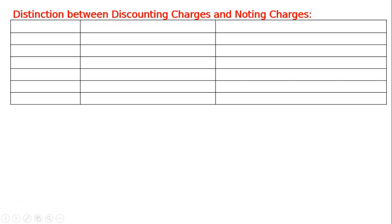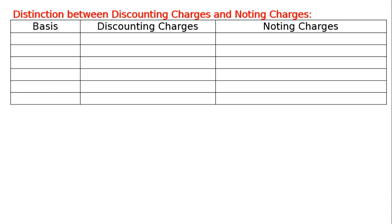Distinction between discounting charges and noting charges. We have to draw three columns: the first one is for the basis, the second one is for discounting charges, and the third is for noting charges.